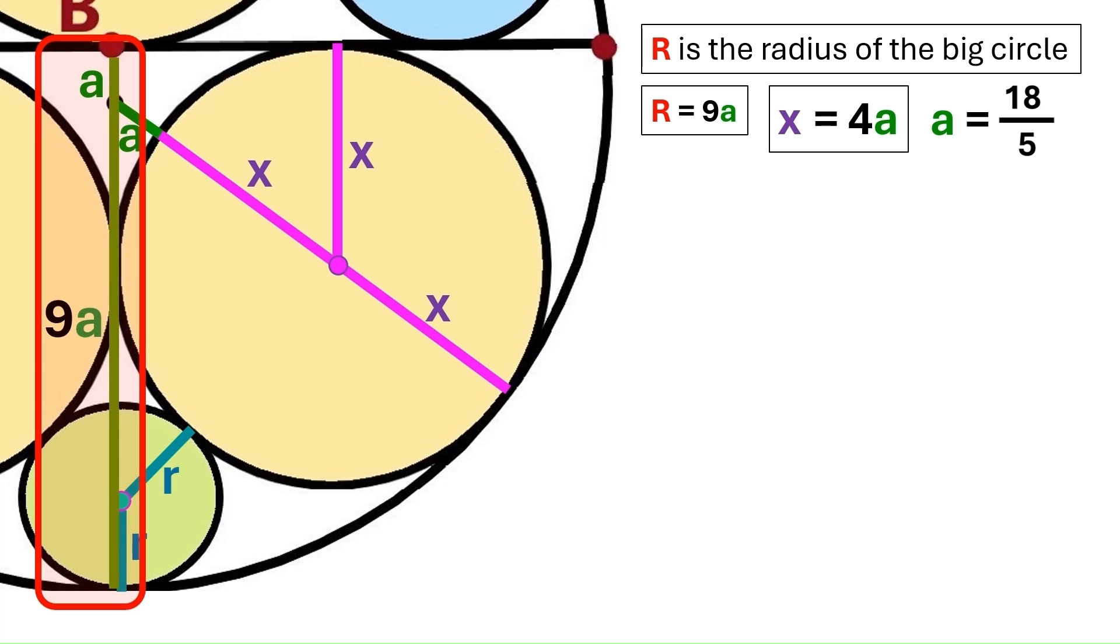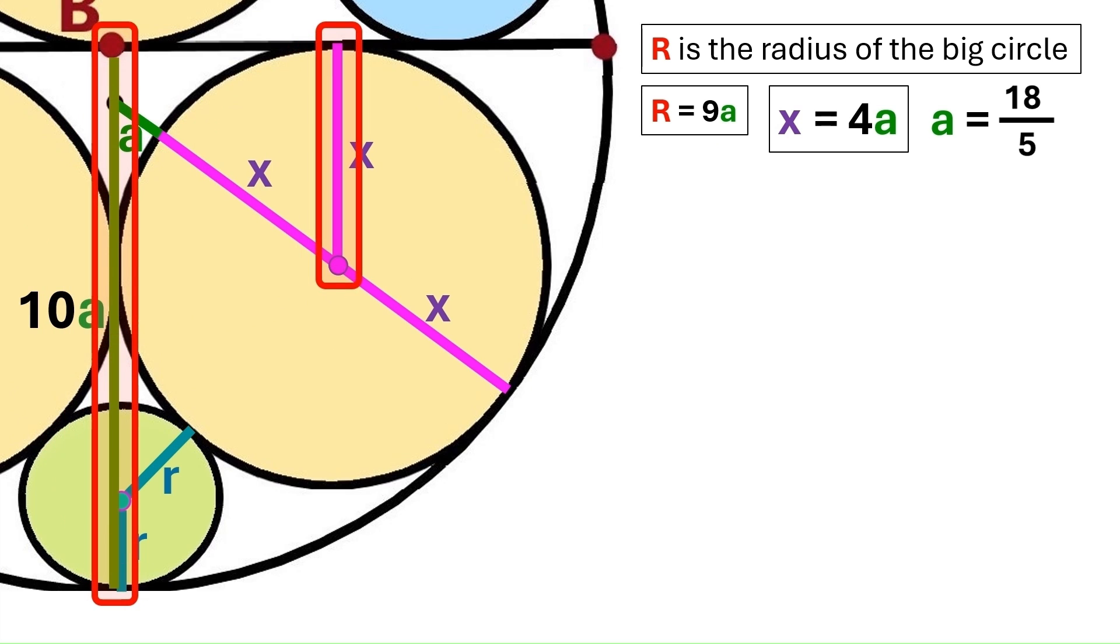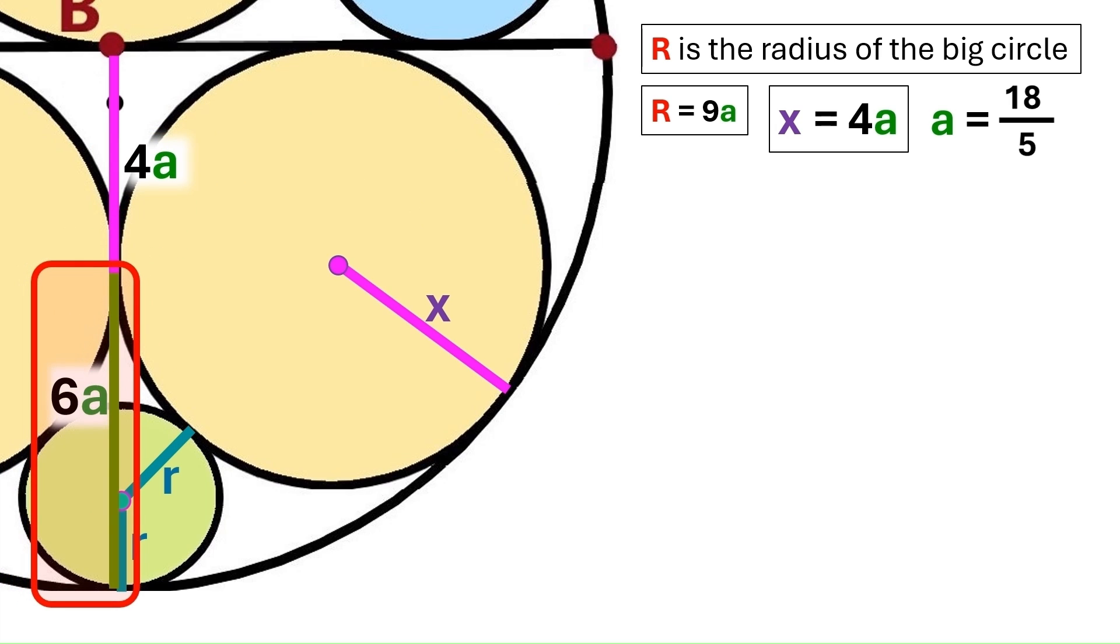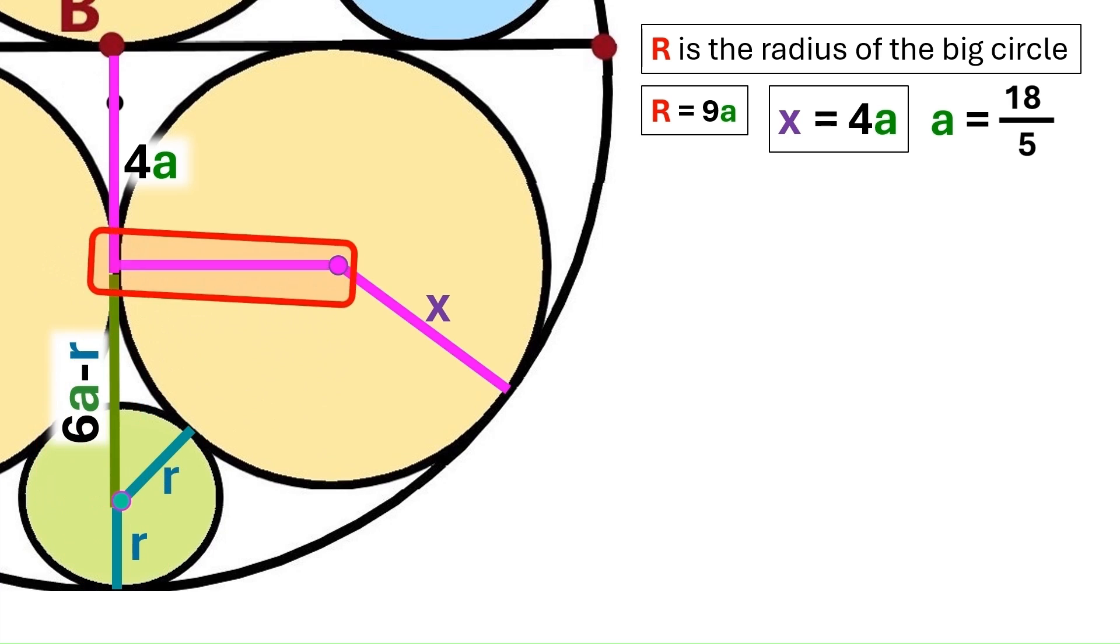Now we've got another a here. And this whole distance adds up to 10a. These two lines are parallel. So we can take this distance x and bring it over to here. And we know x is 4a. So we can replace this x with 4a. And this remaining distance turns out to be 6a. And this distance down here is r. So this segment in the middle has to be 6a minus r.